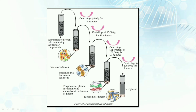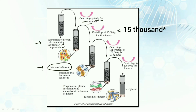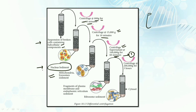Let's go through the speeds at which each step occurs. In the first step, the suspension of broken cells containing subcellular components is centrifuged at 800 g for 10 minutes, and the nucleus sediments. Then the speed is increased to 1500 g for 10 minutes, and the mitochondria and lysosomes sediment. After that, the speed is increased to 10,000 g for 1 hour, and we centrifuge the supernatant. Then fragments of the plasma membrane and endoplasmic reticulum sediment.